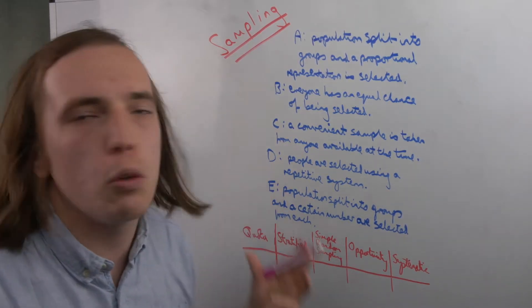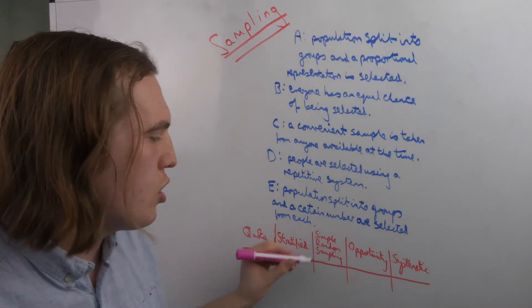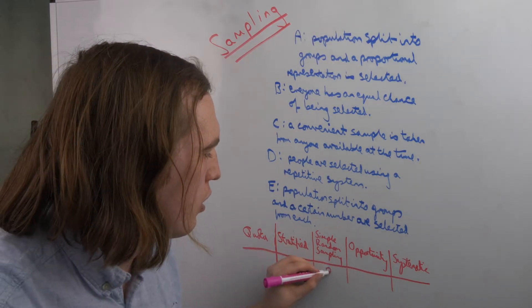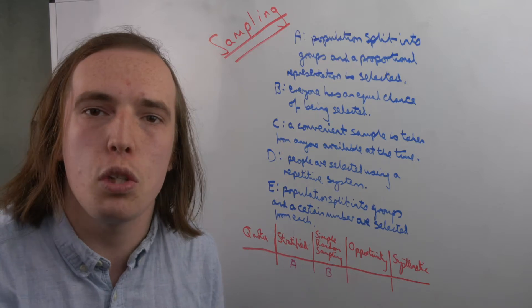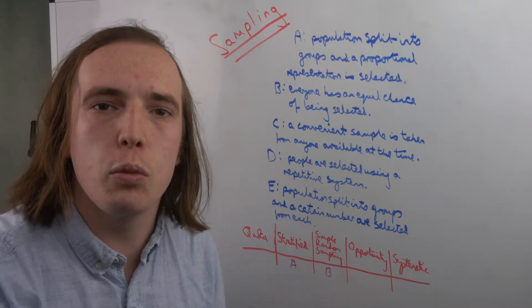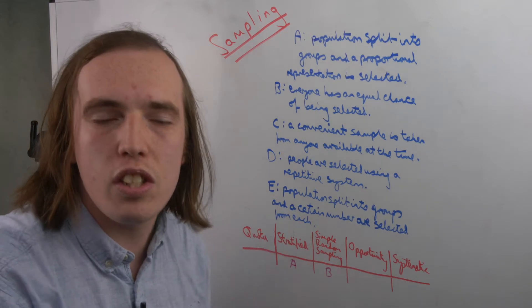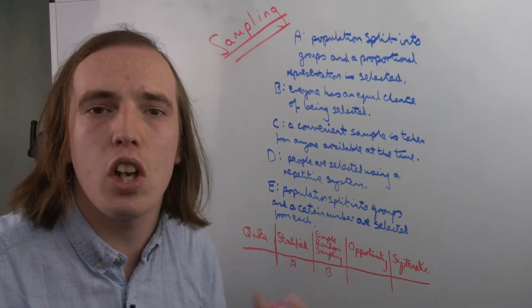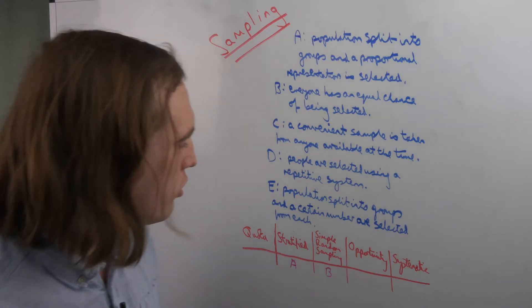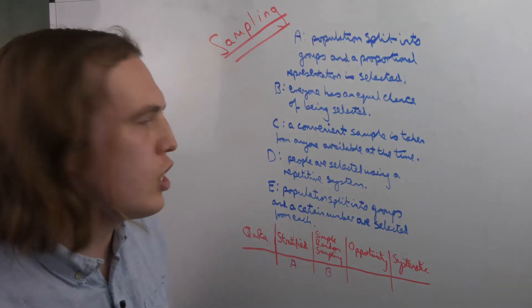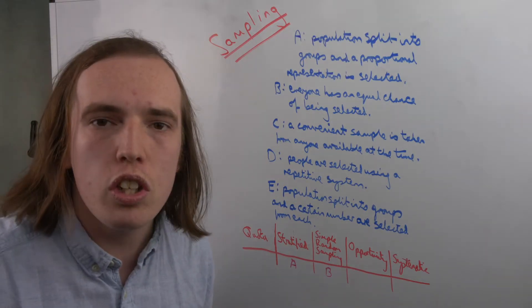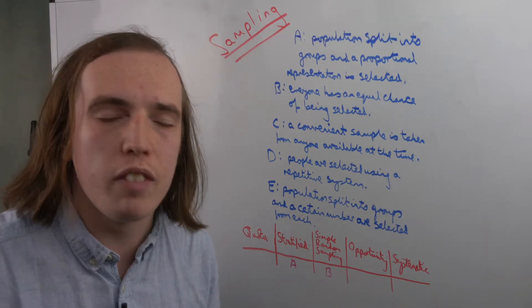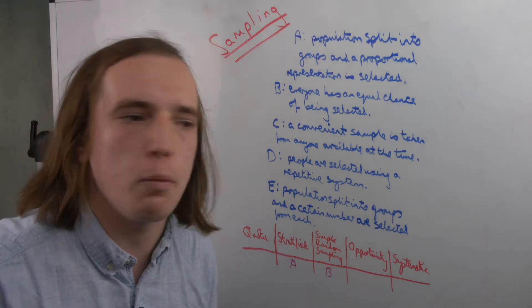B, everyone having an equal chance being selected. That was simple random sampling. So there's no bias whatsoever. Even though it's dealing with everyone, it's not a census, because again it's about having a chance of being selected. C, a convenient sample is taken from anyone around. Well, that's opportunity. It's just convenient. If you see these people, you ask them, you're done.